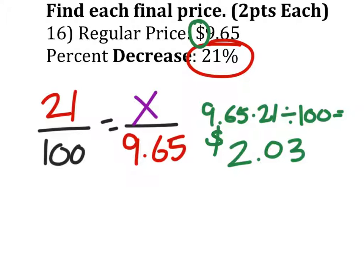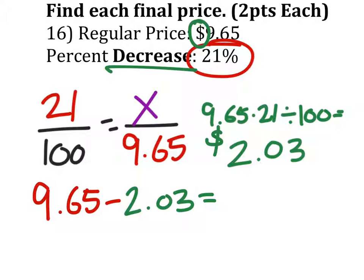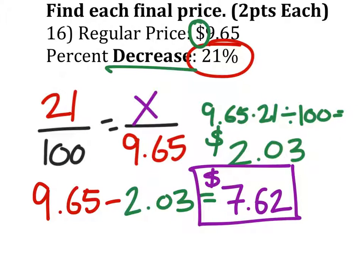So this $2.03 is not the answer though. This is just how much it decreased by. So to find the actual answer we've got to take that $9.65, the regular price, and subtract the $2.03. And that would give me $7.62 as the final price. So that is our actual answer.